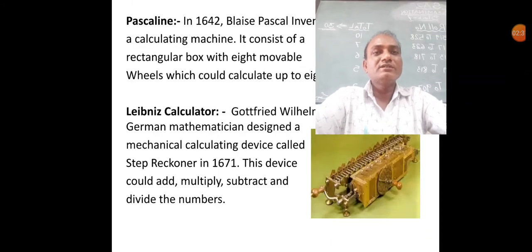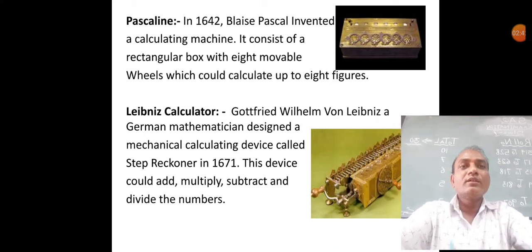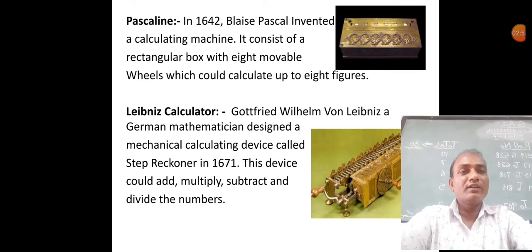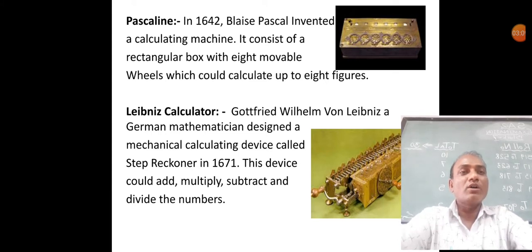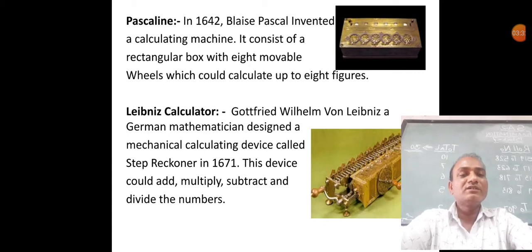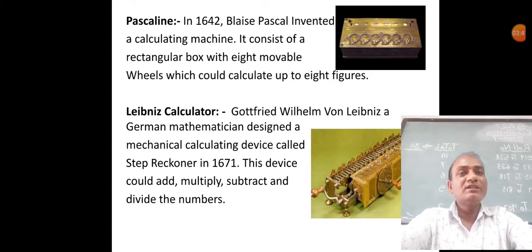The next computing device is Pascaline. In 1642, Blaise Pascal invented a calculating machine. Blaise Pascal was a great scientist who invented this calculating device and gave it the name Pascaline. It consists of a rectangular box with eight movable wheels. These wheels could calculate up to eight figures.